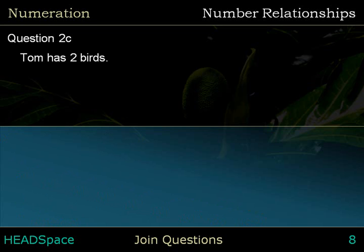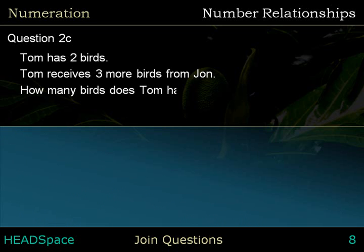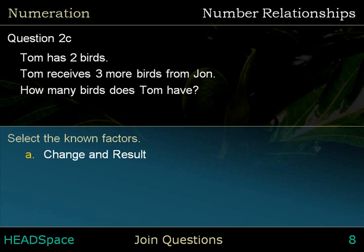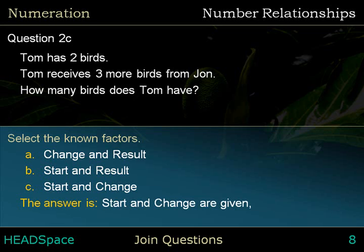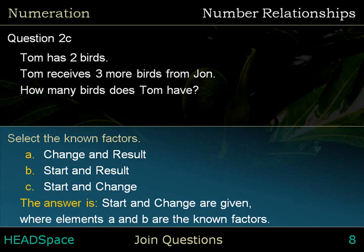Question 2c. Tom has two birds. Tom receives three more birds from John. How many birds does Tom have? Select the known factors. The answer is start and change, where elements A and B are the known factors.